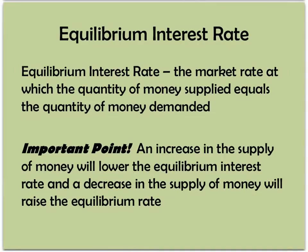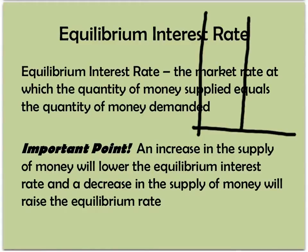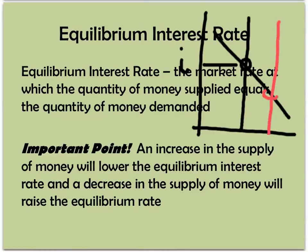Interest, which we now know is the price you pay for money, is set by the interaction of buyers and sellers of money. Here we have the supply of money — it's fixed because the Fed sets it. Here is demand for money, and where quantity supplied equals quantity demanded, we get an equilibrium price, or equilibrium interest rate. If we increase the supply of money — let's say the Fed moves it over here — our equilibrium interest rate goes down.